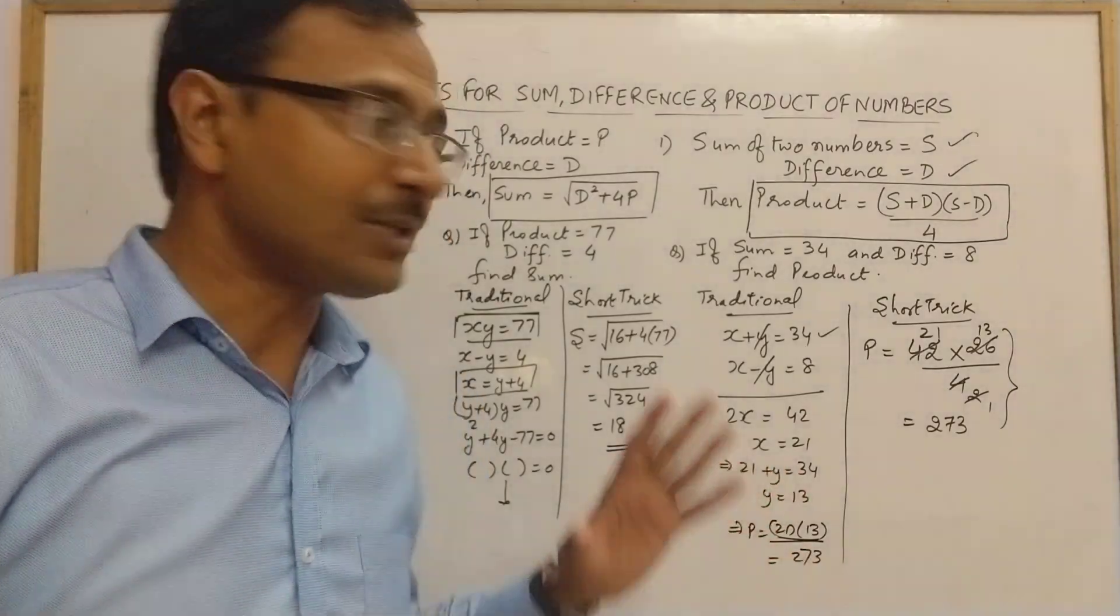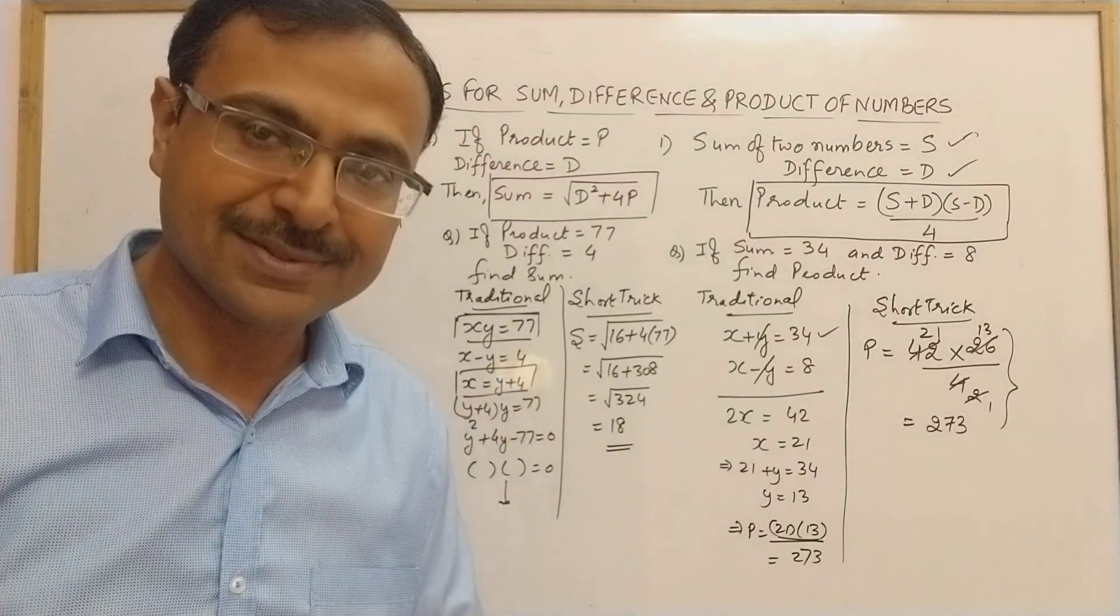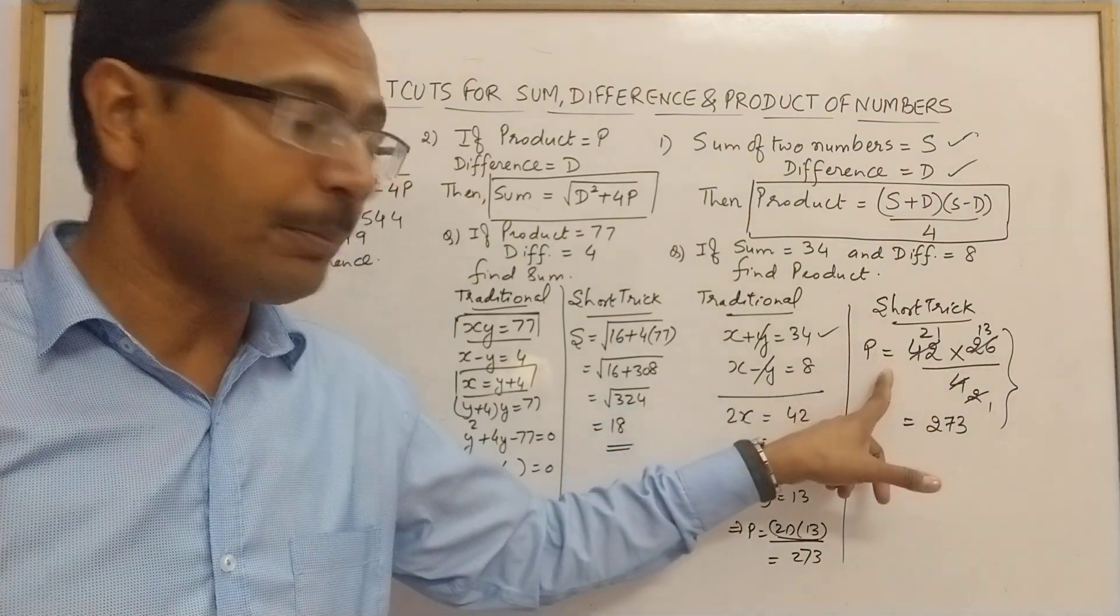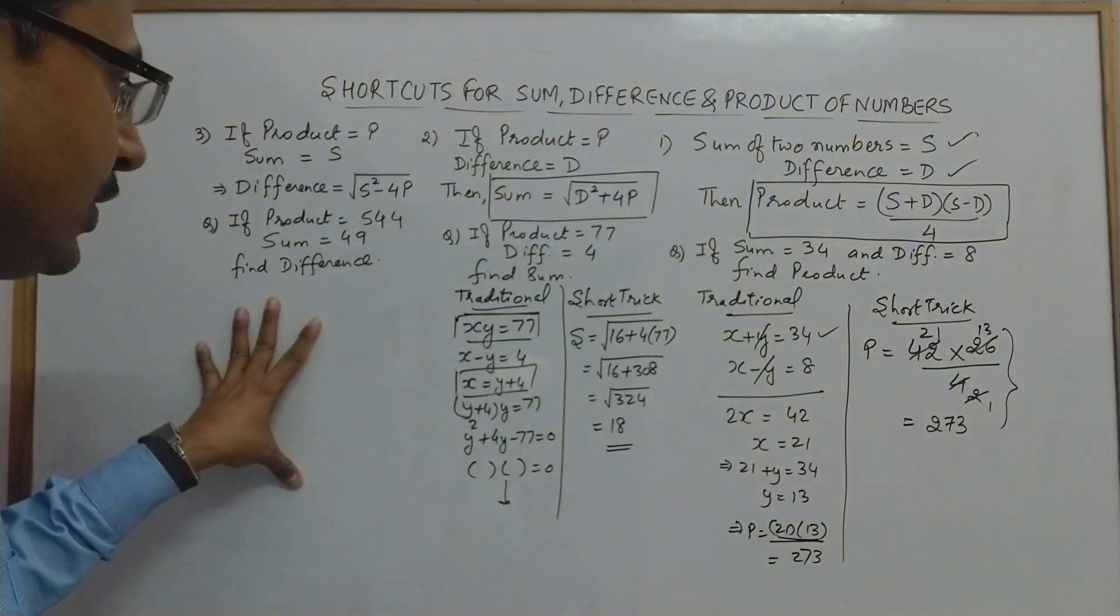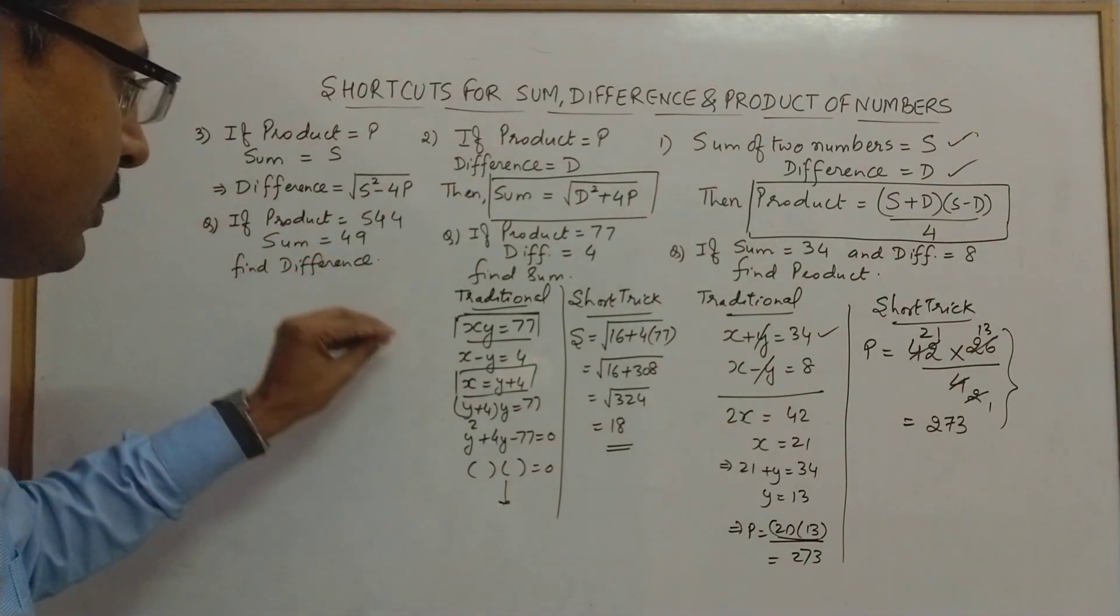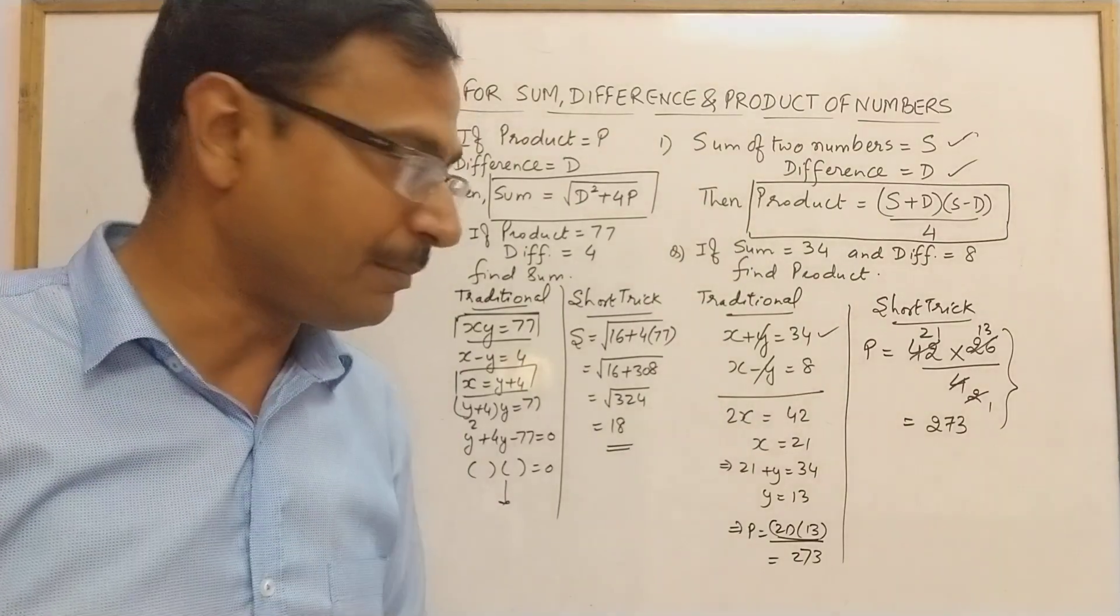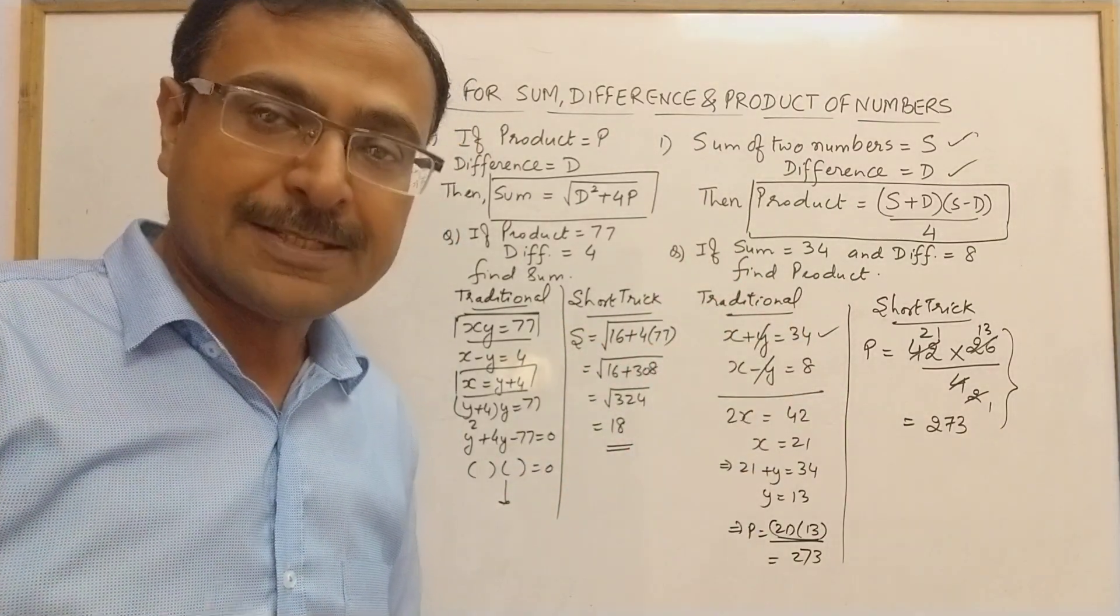The beauty of this method is that you don't have to find the numbers x and y. You can find the product directly, the sum directly, and the difference can also be found directly without finding the two numbers.